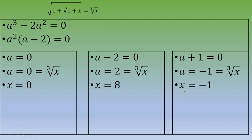So far we have found three candidate values: negative 1, 0, and 8. Because we performed squaring operations, we need to verify each of these by plugging them back into the original equation.